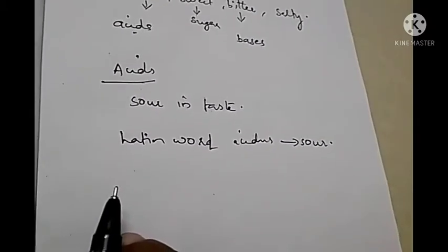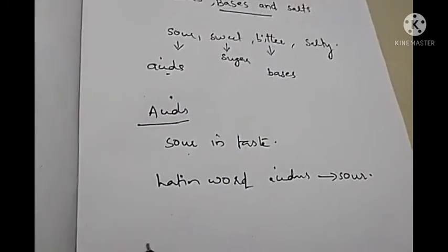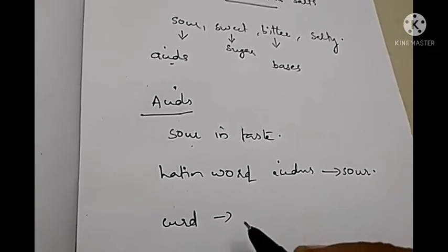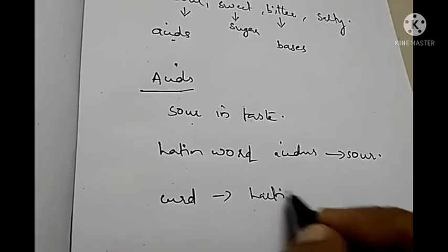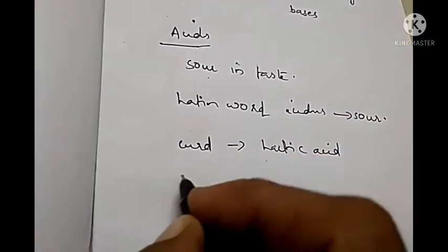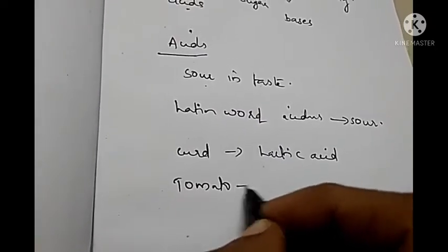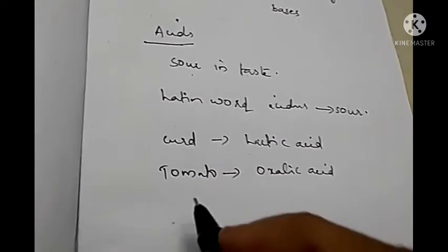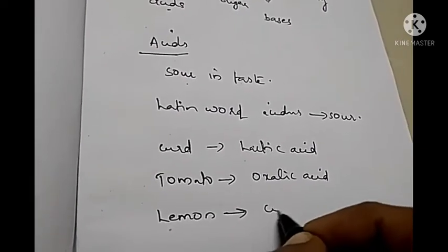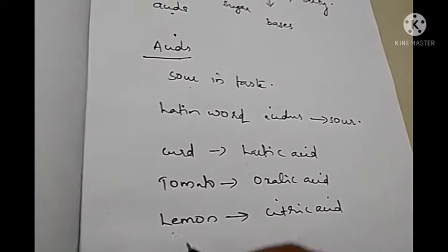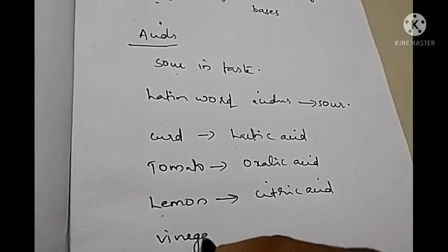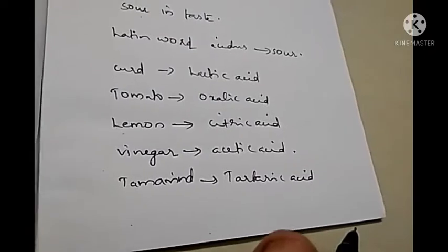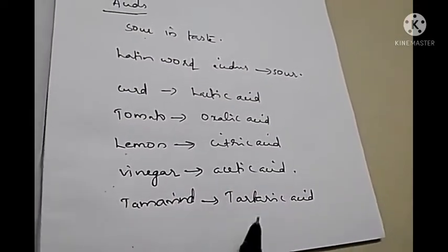Can you give some examples for acidic substances? Acidic means they will be sour in taste. The examples are: curd, which is sour in taste — it is because it contains lactic acid. Then, tomato — it is also sour in taste due to the presence of oxalic acid. Then, lemon — it contains citric acid. Then, vinegar — that contains acetic acid. These are some food items which are sour in taste, and the sour taste is due to the presence of different acids in them.